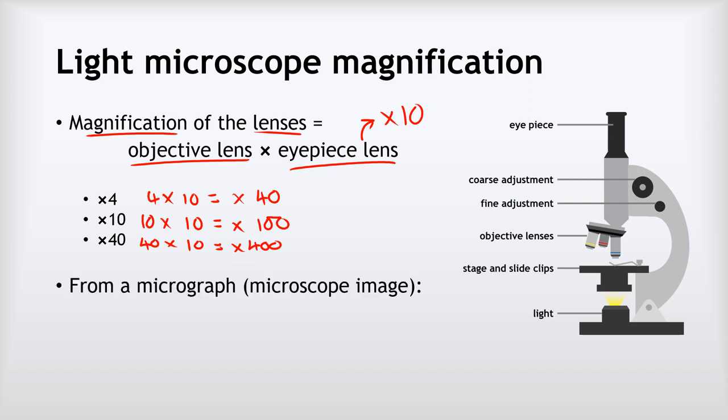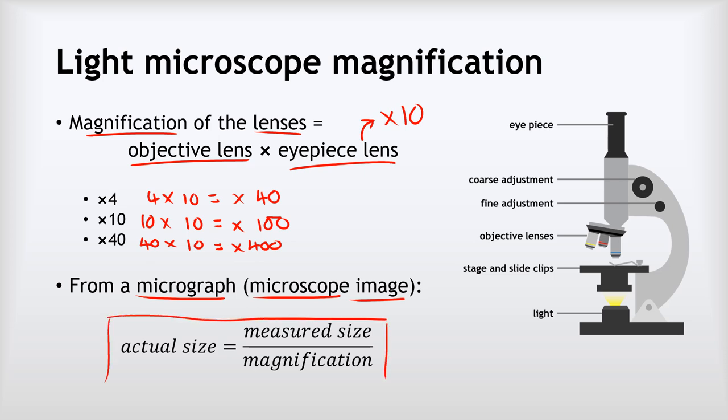Now the other kind of calculation is to be able to do calculations involving micrographs, that is the microscope images that are produced when we look through the eyepiece lens. Now the calculation we need here is that the actual size of something that we view through the microscope is the measured size divided by the magnification. So what we'll look at on the next couple of slides is a few examples of that in practice.